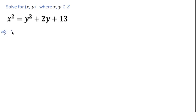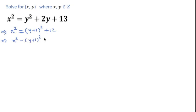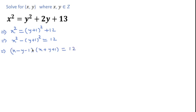I will write this equation: x squared equals (y + 1) squared plus 12. Bringing the right side over: x squared minus (y + 1) squared equals 12. And this can be written using the difference of squares as (x minus y minus 1) times (x plus y plus 1) equals 12.